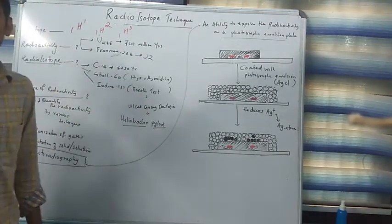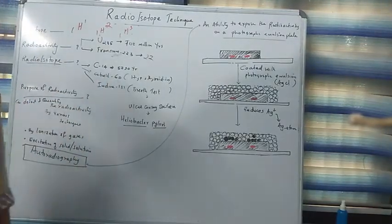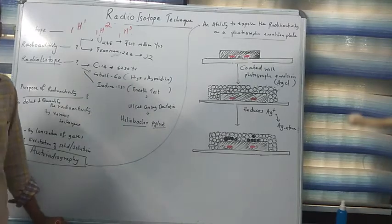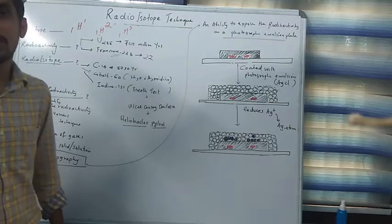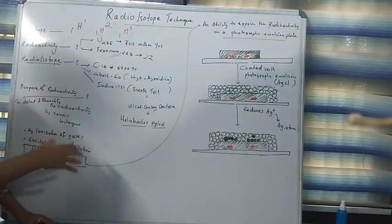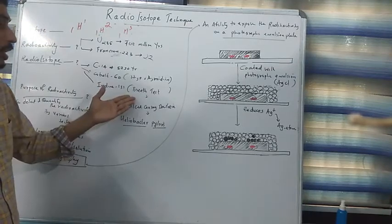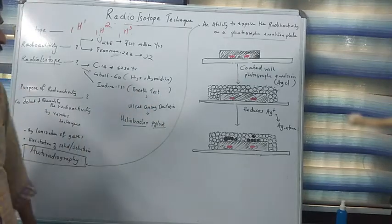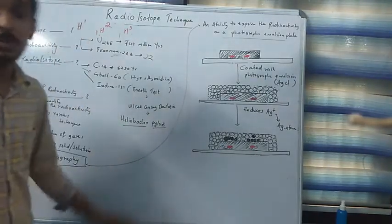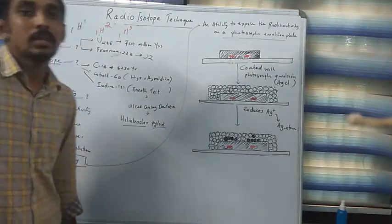Carbon-14 has a half-life period of 5,730 years, so it will take a long time to become half. The second example is cobalt-60, which is a radioisotope of cobalt. It performs a definite role in the field of biology and is used against hypothyroidism in humans. Similarly, iodine-131 is a radioisotope of iodine, and it is commonly used in breath tests for detecting the ulcer-causing bacteria, Helicobacter pylori.